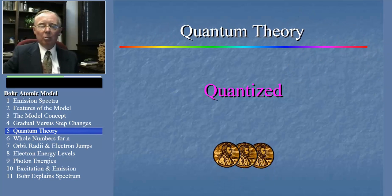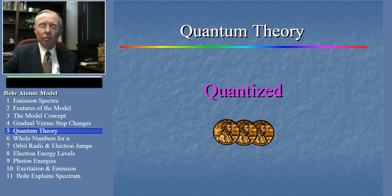Take money for example. I could give you two pennies, or I could give you five pennies, but I can't really give you 3.4 pennies. Money is quantized in that sense.